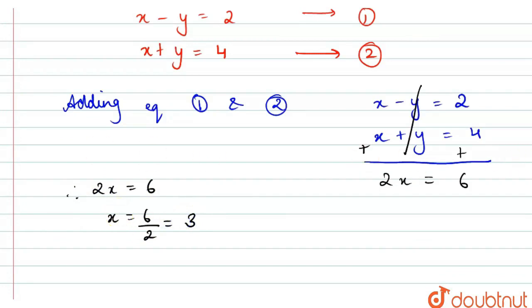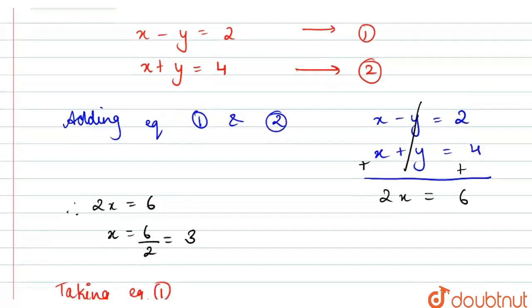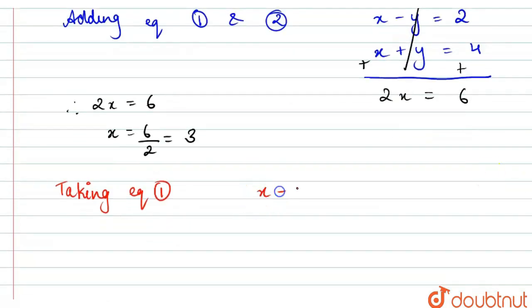Now we have the value of x. Taking equation 1, which says x minus y equals 2, and substituting x equals 3, we get 3 minus y equals 2. So y equals 1.